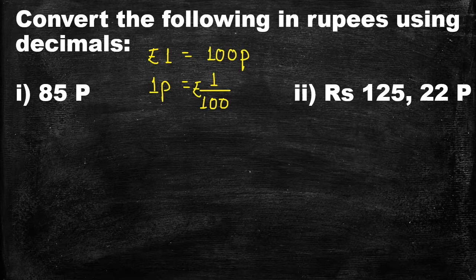If we have to convert rupees into paise, we multiply by 100. But if we have to convert paise into rupees, we divide the number by 100.